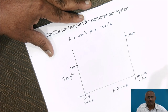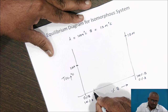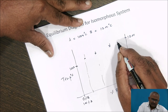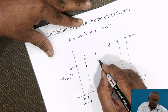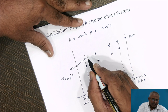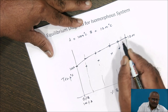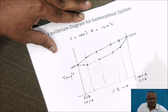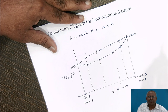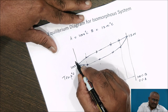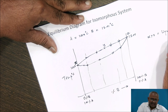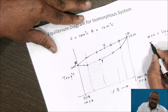Now, we have to note down the liquidus and solidus temperatures for various compositions. For various compositions we plot all liquidus temperatures, then all solidus temperatures. After that, we draw a line joining all the liquidus temperatures and a line joining all the solidus temperatures. This completes the construction of the equilibrium diagram for the isomorphous system. The uppermost line, named XYZ, is the liquidus line, and the other line, named XPZ, is the solidus line.